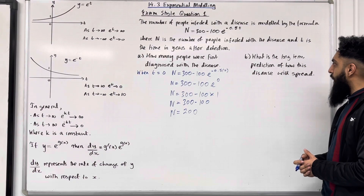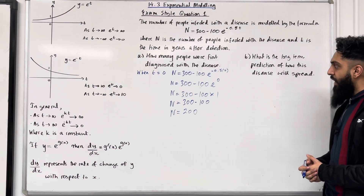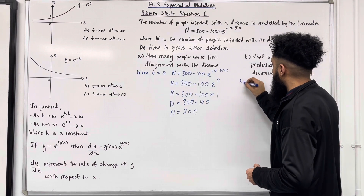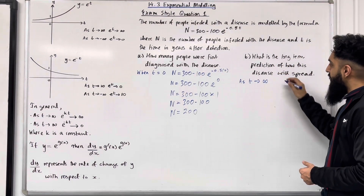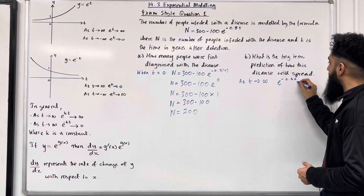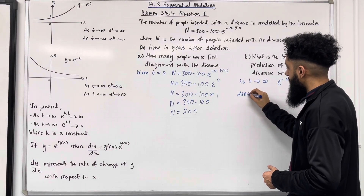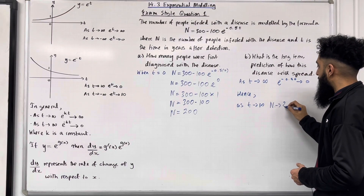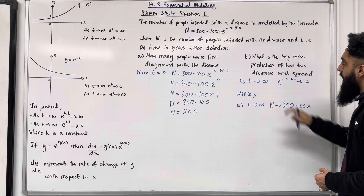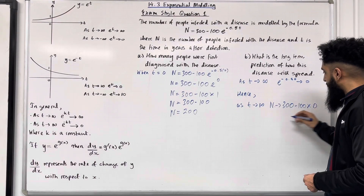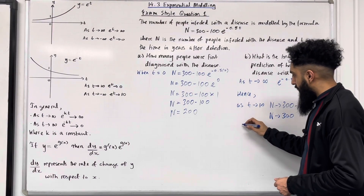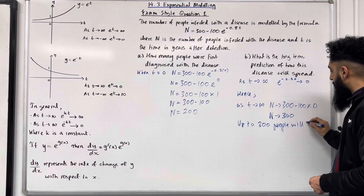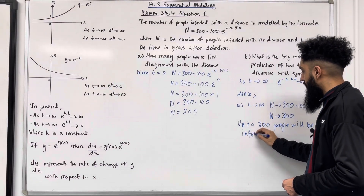Part b: what is the long-term prediction of how this disease will spread? We're working out what N tends to as t tends to infinity. As t tends to infinity, e^(−0.5t) tends to 0, hence N tends to 300 − 100×0 = 300. We can conclude that up to 300 people will be infected.